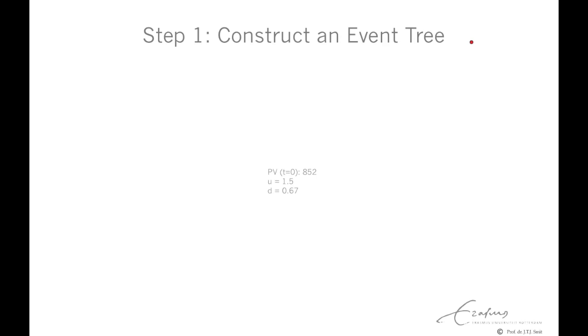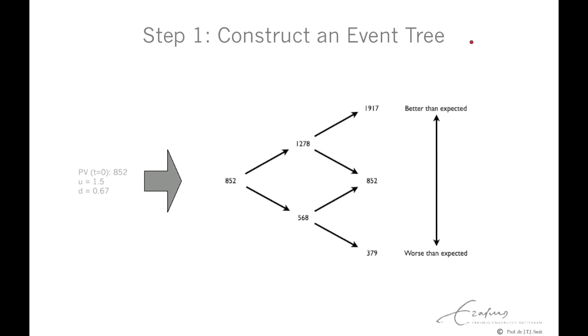Step one, we construct an event tree. This is the forward process. So we have the value of 852 and it might go up with 1.5 or go down with 0.67, depending on the uncertainty of the underlying value or the uncertainty in oil prices. So the 852 might go up to 1.2 billion or it might go down to a little bit more than 500 million. Or it might go up again, or it might go up and go down, or go down and go up.